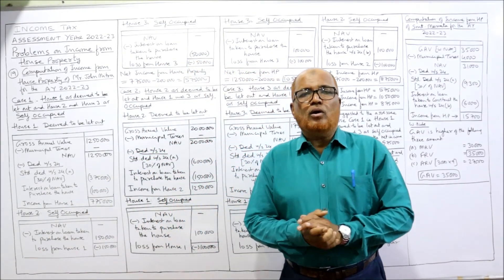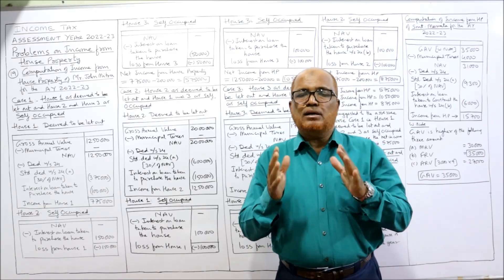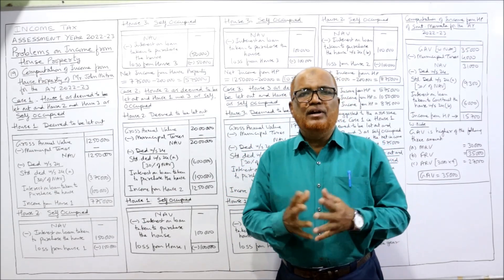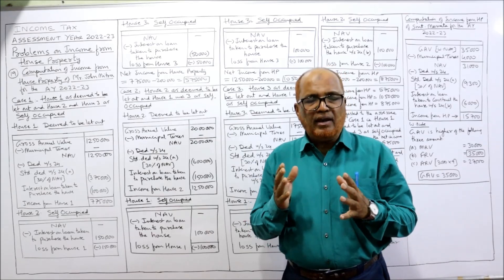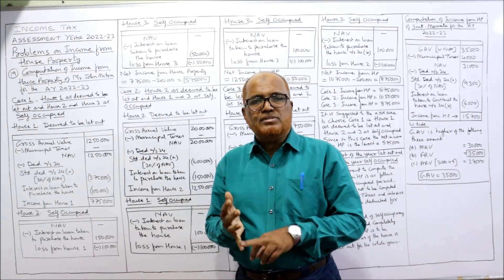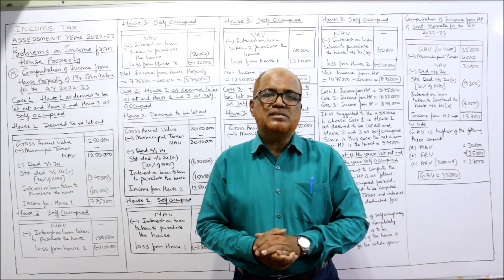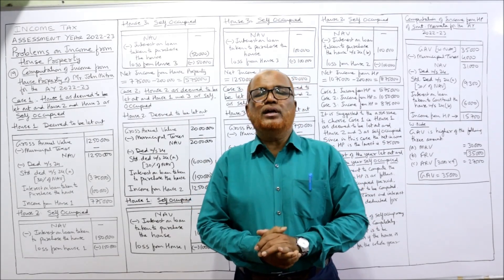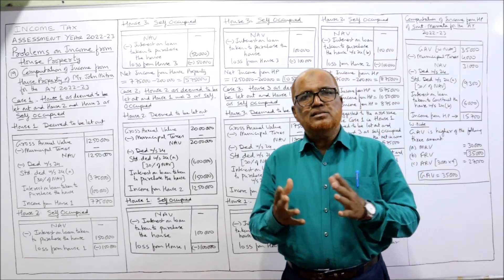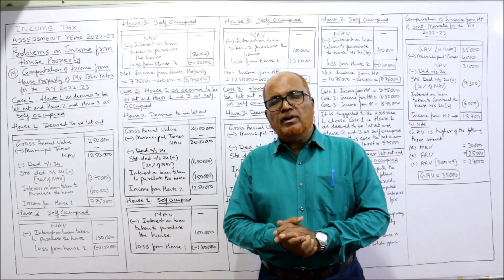Totally 20 problems on computing income from house property have been explained, covering all different types. If you are really interested, watch all the videos sequentially for a complete command of the subject. Two heads of income are now completed — income from salary and income from house property. The next video will cover the next head: Profits and Gains of Business and Profession (PGBP). If you are satisfied, please like, share, comment, and subscribe to the channel.